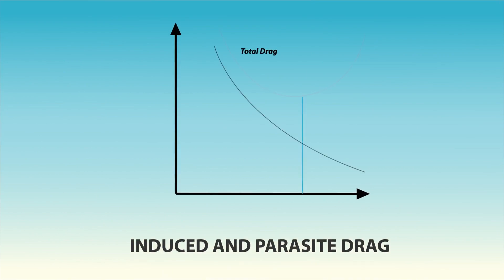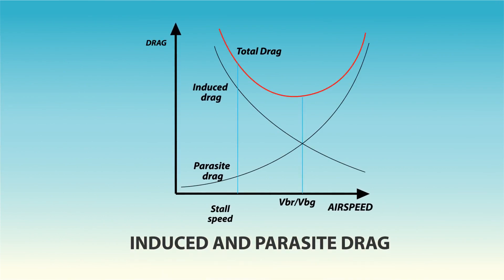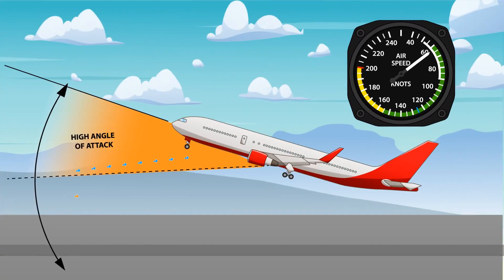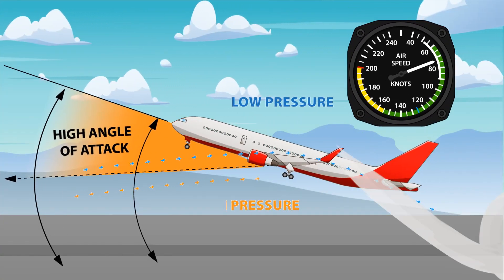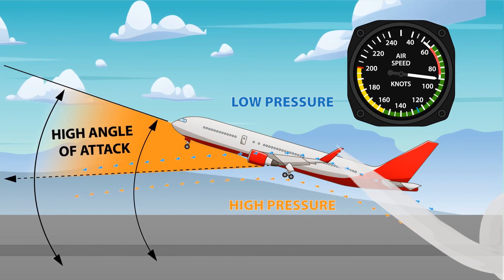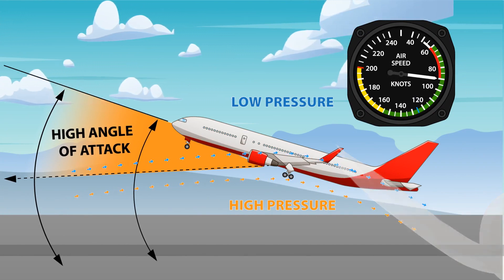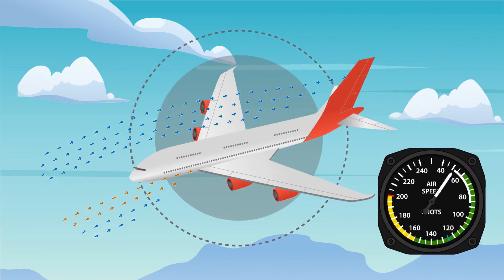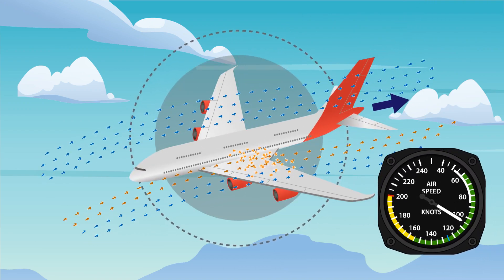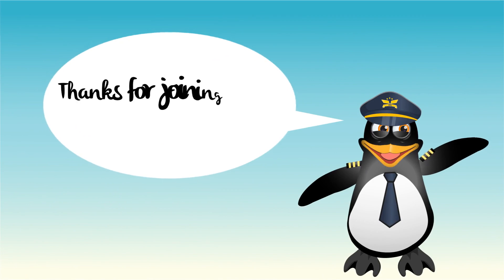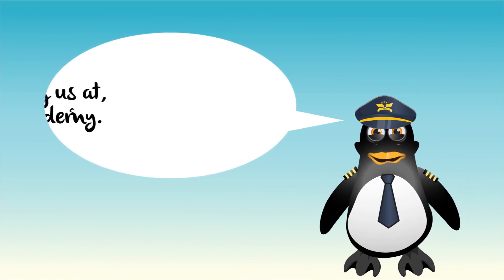These graphs represent induced drag and parasite drag as airspeed changes. Induced drag is most significant at low airspeeds and high angles of attack, where the pressure differential between the top and bottom of the wing is greatest. On the other hand, parasite drag increases by the square of the airspeed — if airspeed is doubled, parasite drag increases fourfold. Thanks for joining us at the Ace Pilot Academy. See you next time!